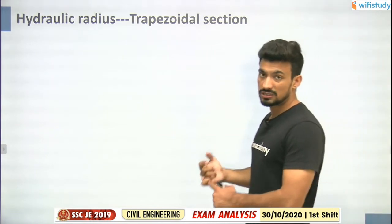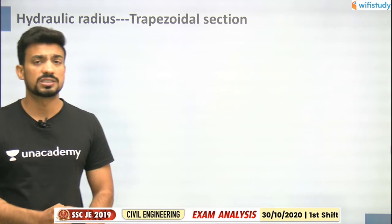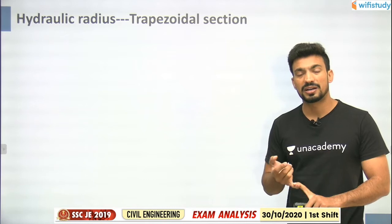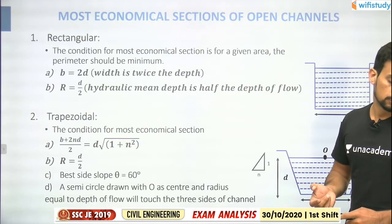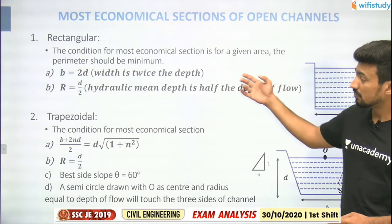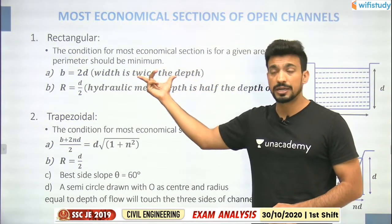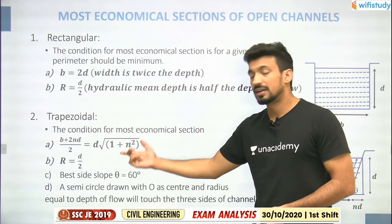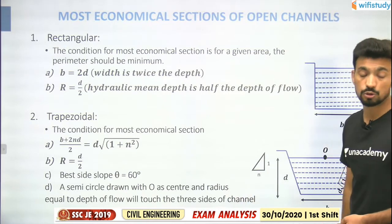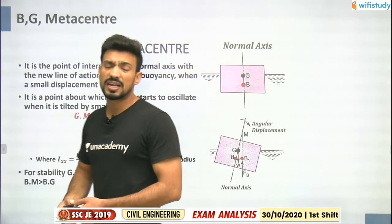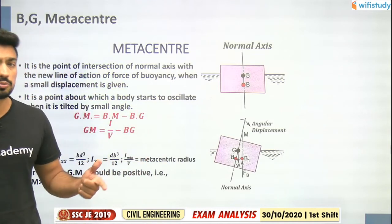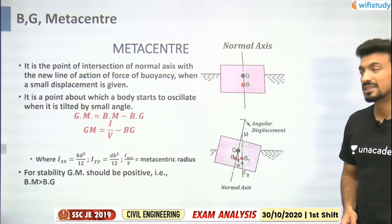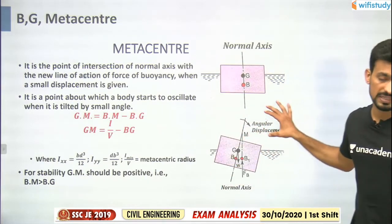Economical section questions appeared in every shift. For rectangular channel, statement A was asked in one shift, statement B in the next. For trapezoidal channel, hydraulic radius was asked. For circular channel, maximum discharge condition was asked in one shift; the velocity condition is still remaining - don't miss it.